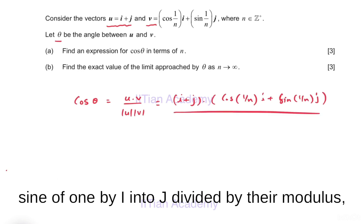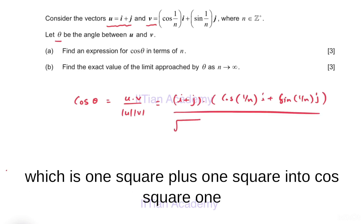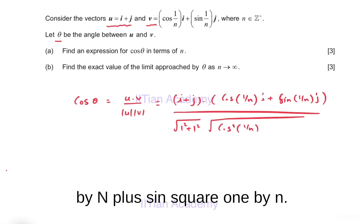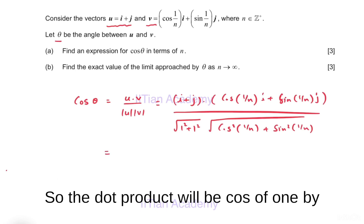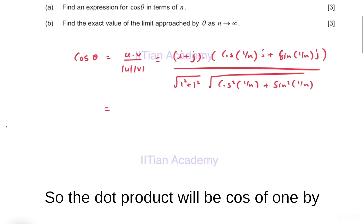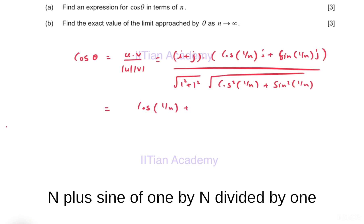Divide by their modulus, which is √(1² + 1²) times √(cos²(1/n) + sin²(1/n)). So the dot product will be cos(1/n) plus sin(1/n).